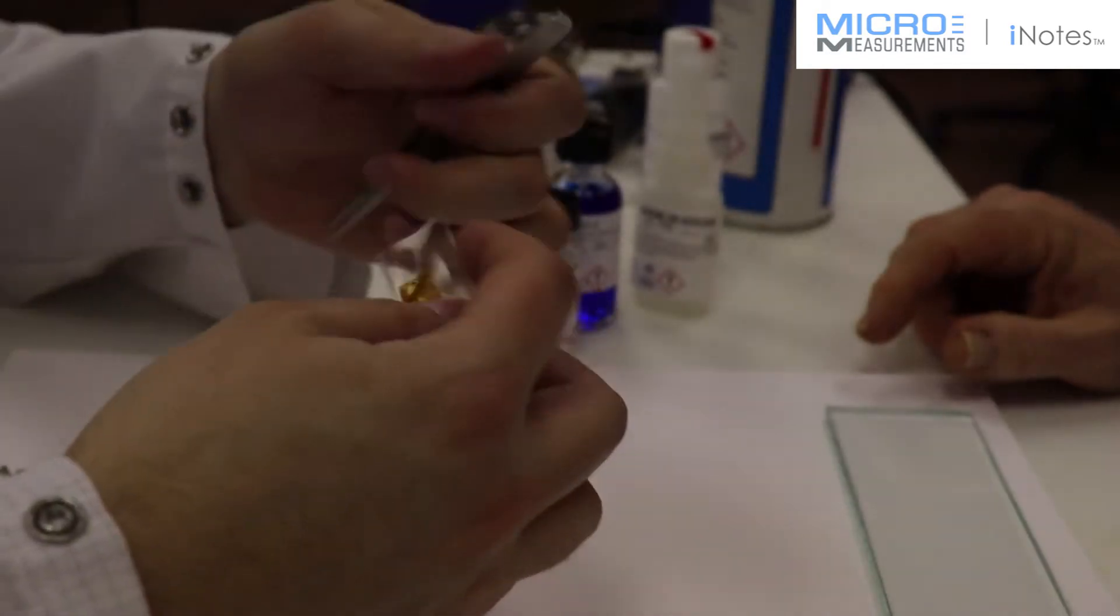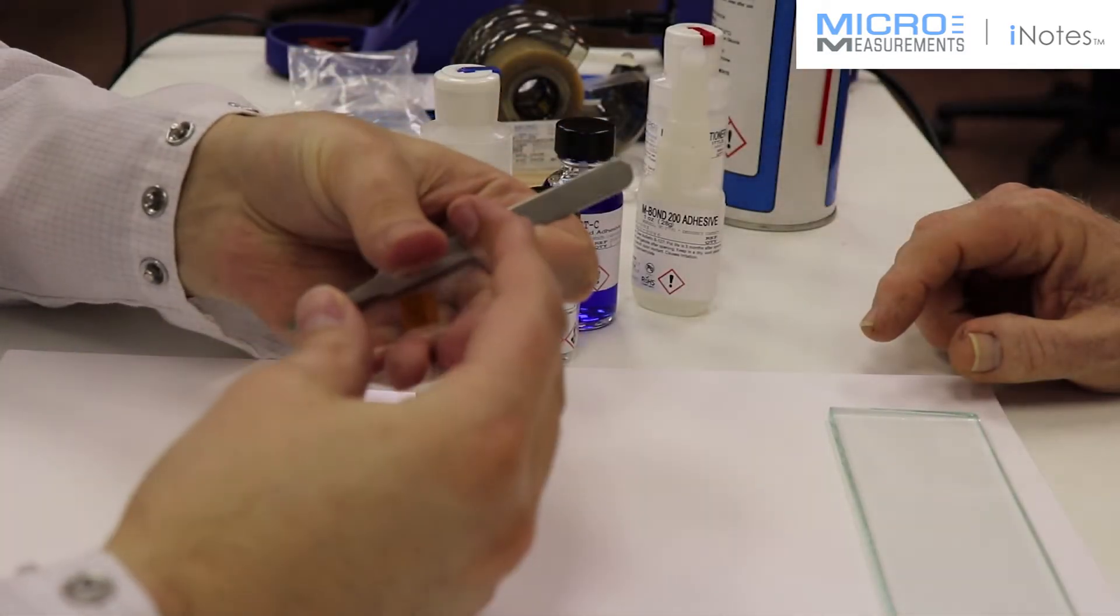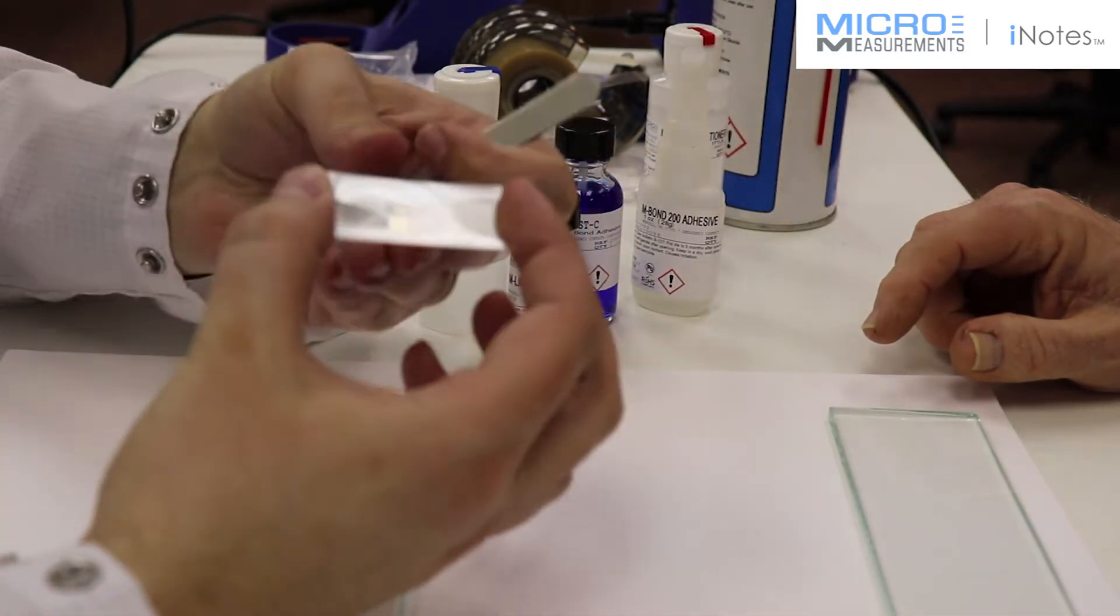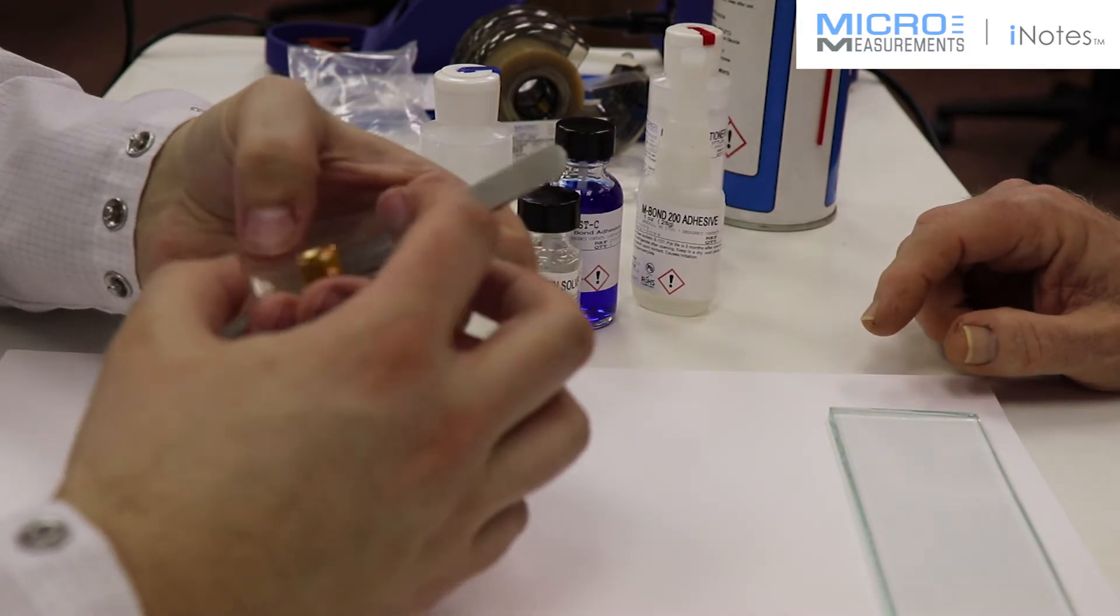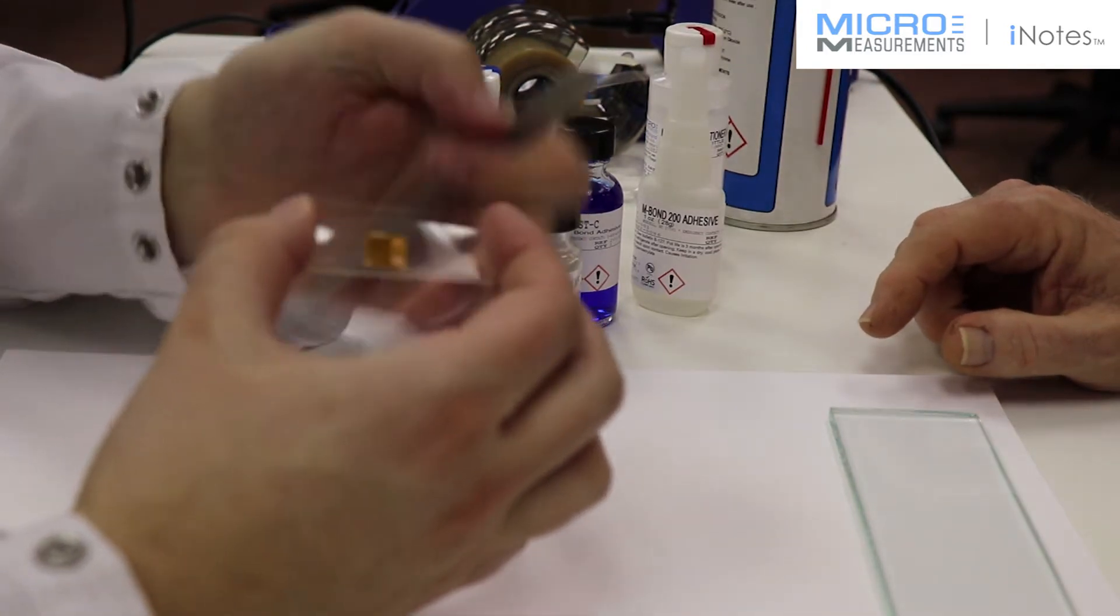Next step, he'll splay open the 250UB CEA series gauge, and he's going to grab it by the tab end of the gauge. That way, he doesn't damage any of the grid.